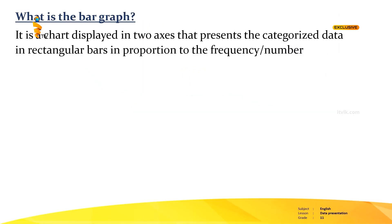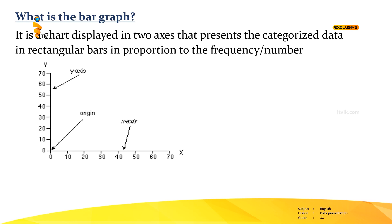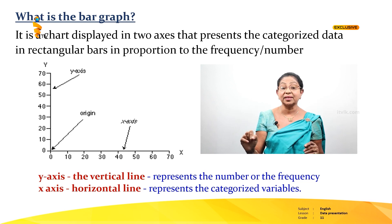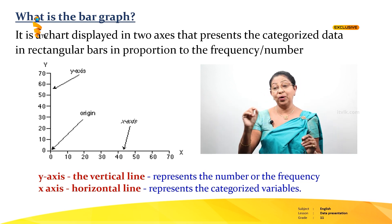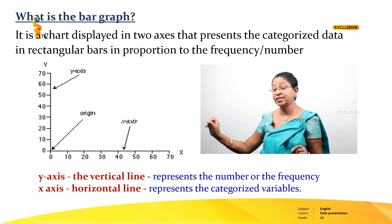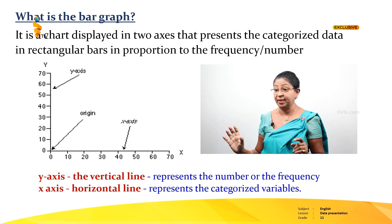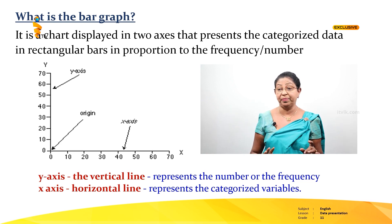Let's see what is the bar graph. It is a chart displayed in two axes that presents categorized data in a rectangular bar in proportion to the frequency or the number. You can see on the right-hand side. The vertical line is the y-axis and it represents frequency or number. The horizontal line is the x-axis and it represents the categorized variables.